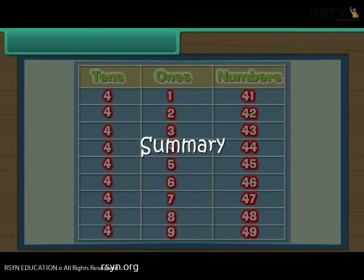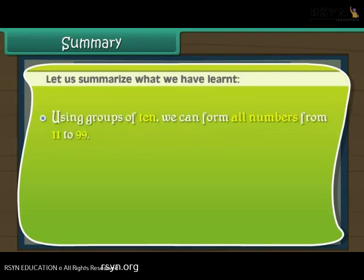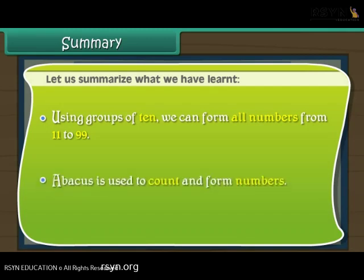Summary. Let us summarise what we have learnt. Using groups of ten, we can form all numbers from 11 to 99. An abacus is used to count and form numbers.